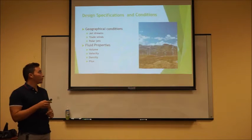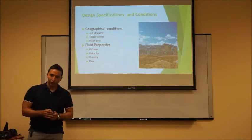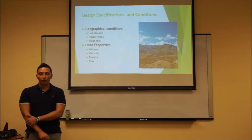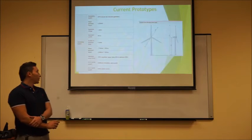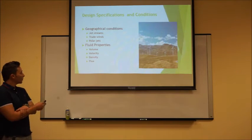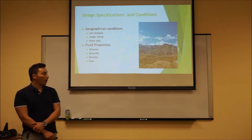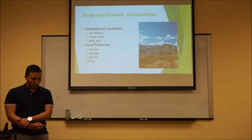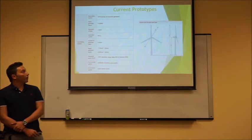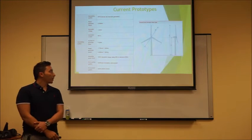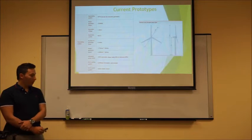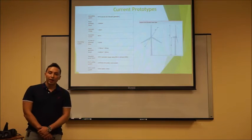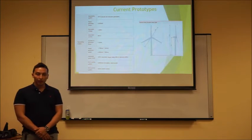For design specifications and conditions: regarding geographic conditions, wind generation is based on large-scale circulations such as jet streams, trade winds, and polar jets. Fluid properties are also in the equation, such as volume, velocity, density, and flux. This is one of the current prototypes — Hitachi's prototype, which is able to develop about 2,000 kilowatts of energy, and is considered a state-of-the-art wind turbine.